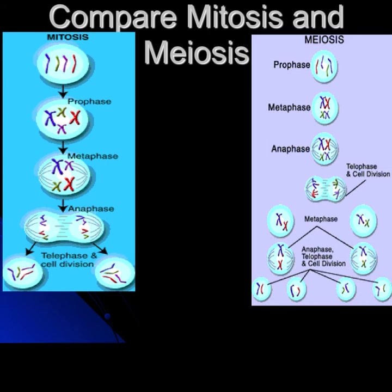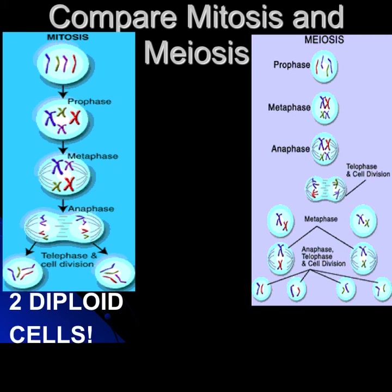In meiosis, we start off with the same four chromosomes as in mitosis. They're copied, but homologous chromosomes are pulled apart — not the chromatids. Then they undergo a second division, which is very much like mitosis. The chromosomes line up, the chromatids are pulled apart, and we end up with four cells with two chromosomes in each. These chromosomes at the bottom would be called gametes, ready to join up with another pair of gametes from the other parent for sexual reproduction.